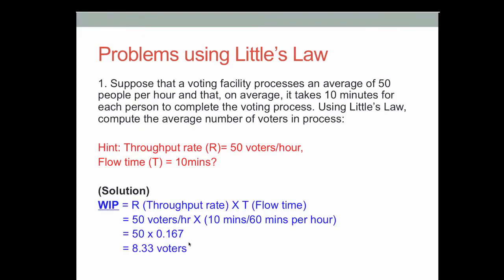So 50 times 0.167 equals 8.33 volts. That is your work in process inventory, which is the average number of voltage in process. Because we know two variables, we can find the third variable, which is WIP.